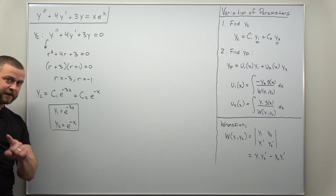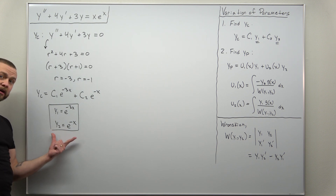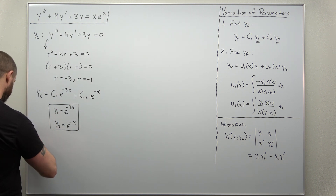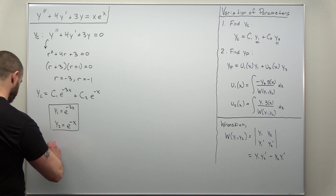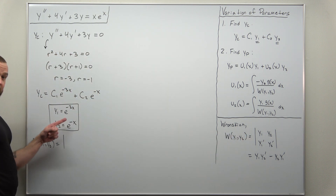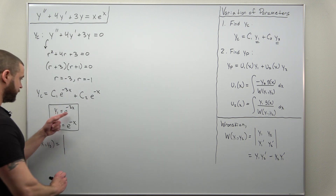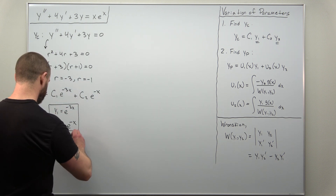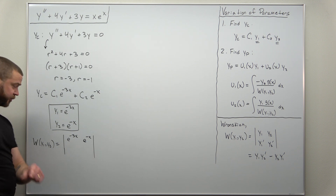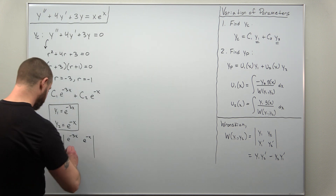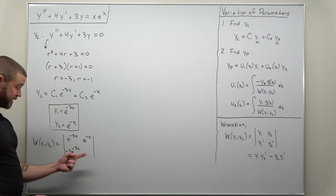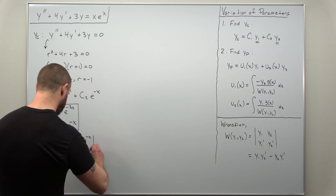When using variation of parameters, I like to immediately calculate the Wronskian of y1 and y2. I set that up as a 2x2 determinant. In the first row we have y1 and y2: e to the negative 3x, and e to the negative x. In the row below are their derivatives, which we get with the chain rule: negative 3 e to the negative 3x, and negative e to the negative x.